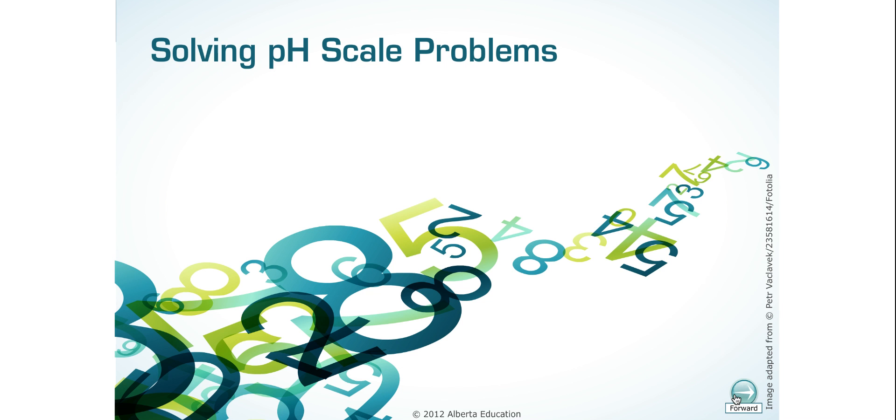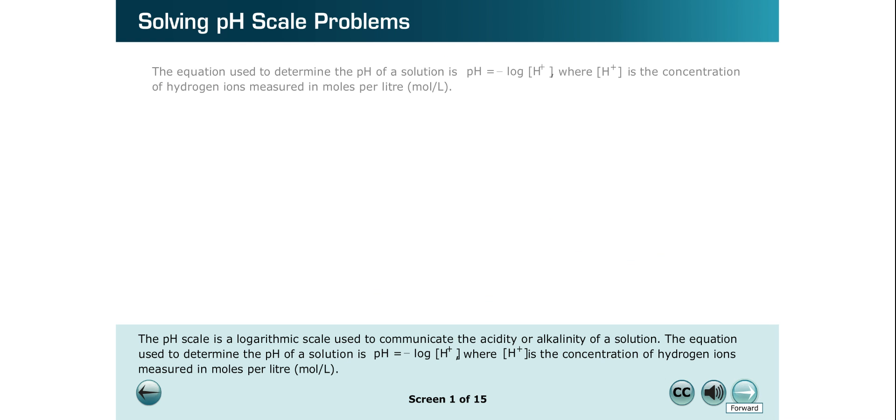The pH scale is a logarithmic scale used to communicate the acidity or alkalinity of a solution. The equation used to determine the pH of a solution is pH equals the negative log of the concentration of hydrogen ions, where the concentration of hydrogen ions is measured in moles per liter.